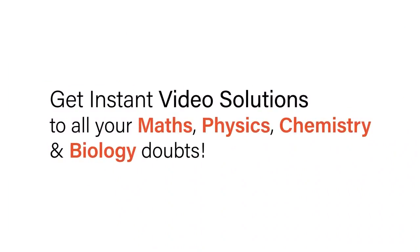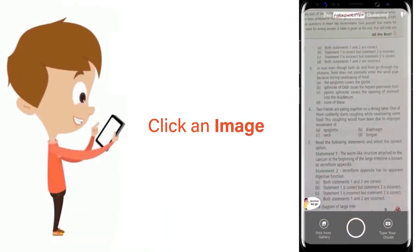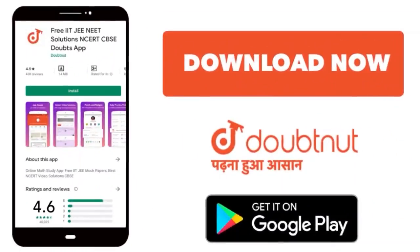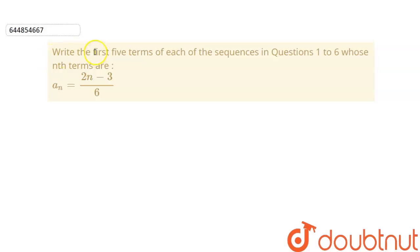With Doubtnet, get instant video solutions to all your maths, physics, chemistry, and biology doubts. Just click the image of the question, crop the question, and get instant video solution. Download Doubtnet app today. The question is to write the first five terms of the nth terms.